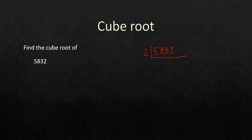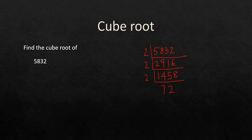Dividing 5832 repeatedly by 2, we get: 5832 ÷ 2 = 2916, ÷ 2 = 1458, ÷ 2 = 729. Now 729 is an odd number so we cannot divide by 2 anymore; we use 3 instead.